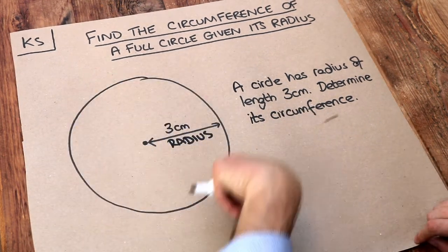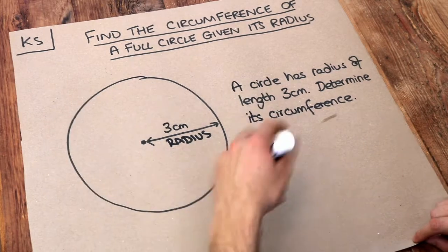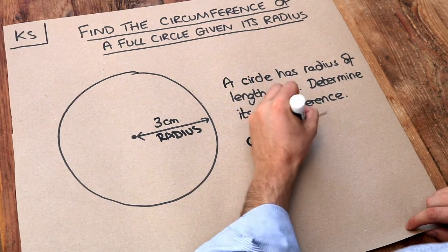Now remember the circumference of the circle is just the perimeter of the circle and there's a simple formula for the circumference.